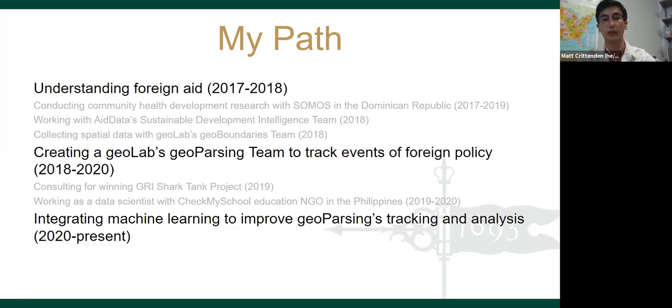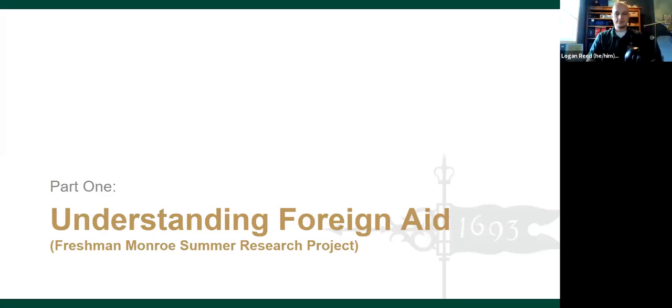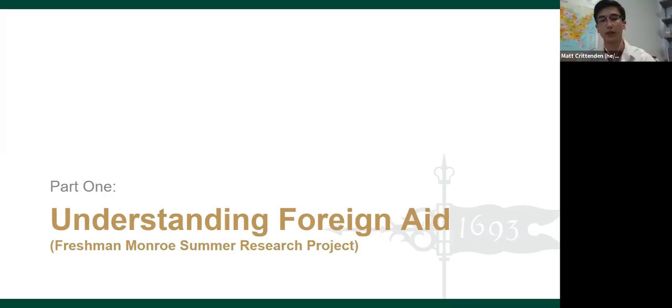Part one: understanding foreign aid. Foreign aid or official development assistance is basically money or other resources which countries send to one another to support economic and social development. It usually goes from more developed countries to less developed countries and it can be done on a bilateral basis, meaning one country sending money to one other country, or a multilateral basis, meaning several countries working together.